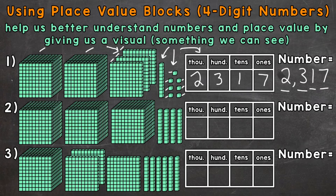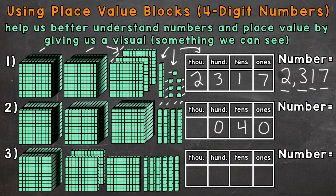Let's go to number two. We'll start with the ones place — we do not have any individual place value blocks, so we represent that by putting a zero in the ones place. Let's go to the tens, where we have one, two, three, and four — so four groups of 10, which has a value of 40. Let's put a four in the tens place. The hundreds — we don't have any groups of 100 there, so we put a zero to represent zero groups of 100. And then lastly, we have one, two, and three groups of 1000, which has a value of 3000, so let's put a three in the thousands place.